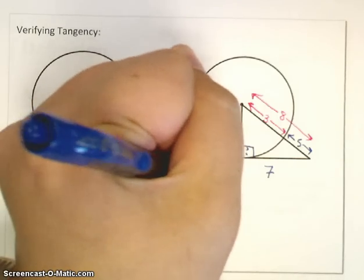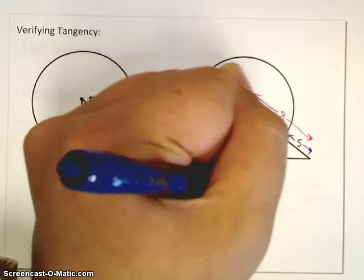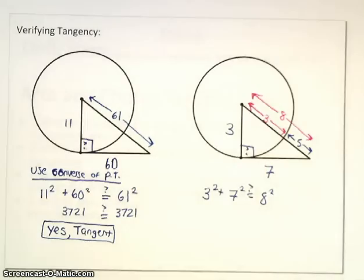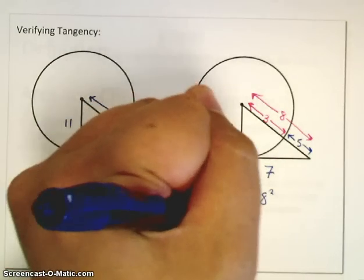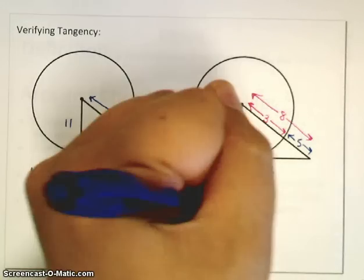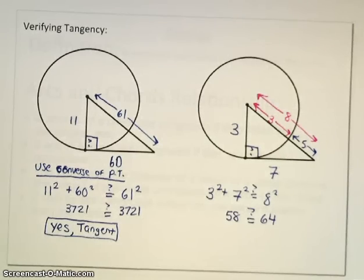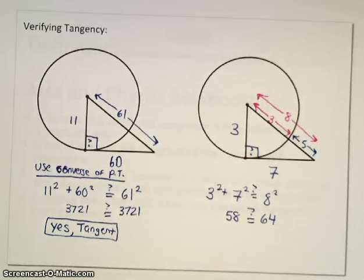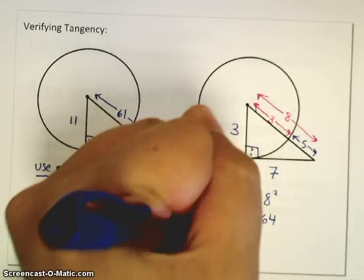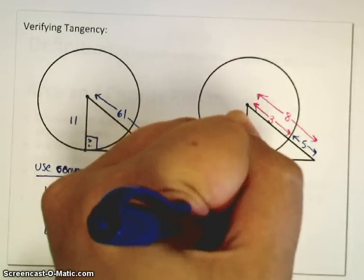So I take three squared plus seven squared equals eight squared. Again, we don't know if it's equal, so we'll throw the little question mark there. Three squared and seven squared, that would be 58. Eight squared gives me 64, and thus I have a problem. This triangle technically is an obtuse triangle, which means it is not, the side length of seven is not a tangent line. So no, it is not tangent here.